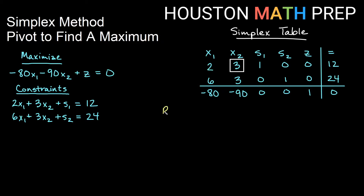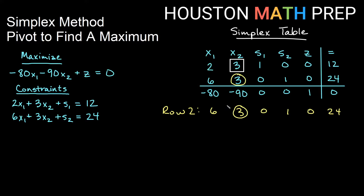I'm going to write down the row that I want to change, which is row two. So I'll copy that down: 6, 3, 0, 1, 0, 24. If I'm eliminating the three here — that's the entry I want to turn into a zero — I'm using the pivot row to change that by adding or subtracting copies of the pivot row to make this a zero.